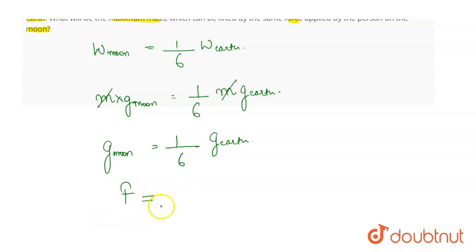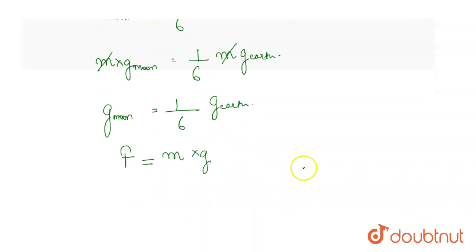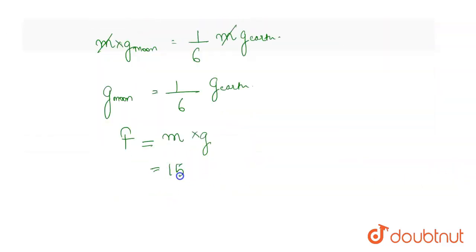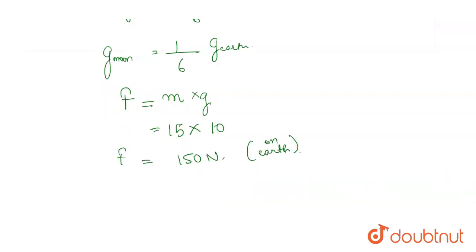The force talked about in this question is the force applied by the man on Earth, which is also his weight. So force F = mg. Taking m = 15 kg and g = 10 m/s² for convenience, F = 15 × 10 = 150 Newton. This force is on Earth.